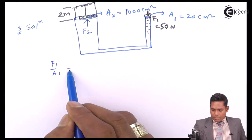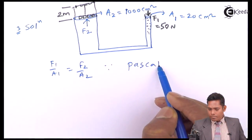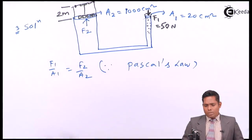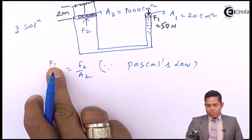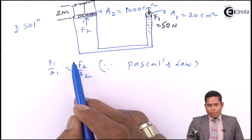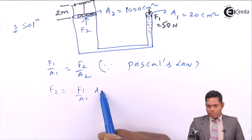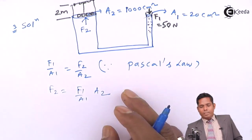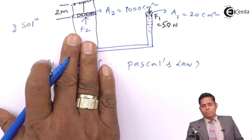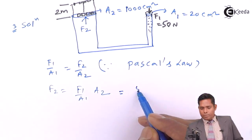From Pascal's law, we know that F1 divided by A1 equals F2 divided by A2, because the pressure experienced at both sides remains the same. From this relationship, we can solve for F2. Everything is given, so we put in the values to find how much force F2 is.